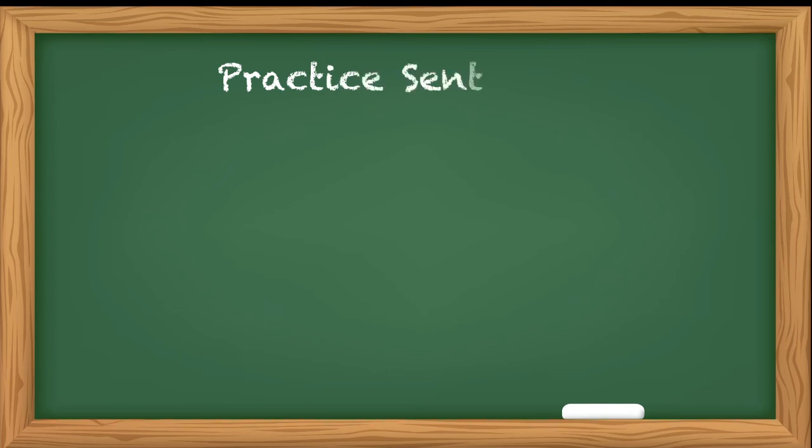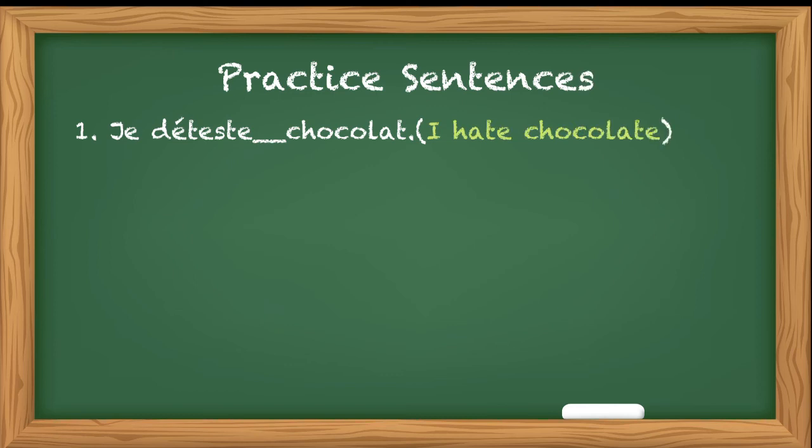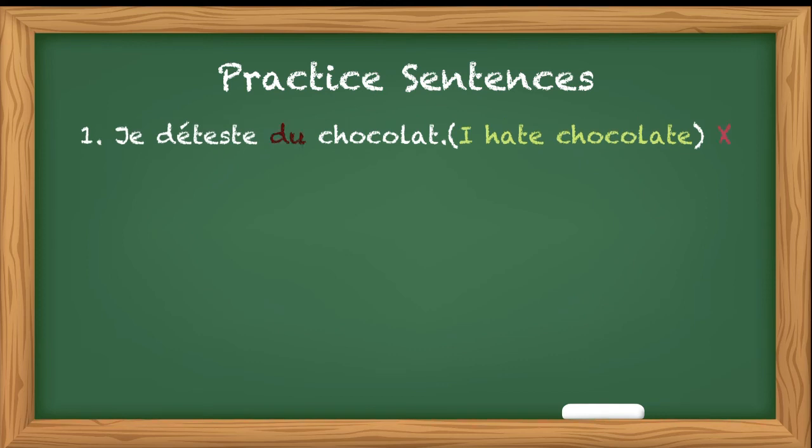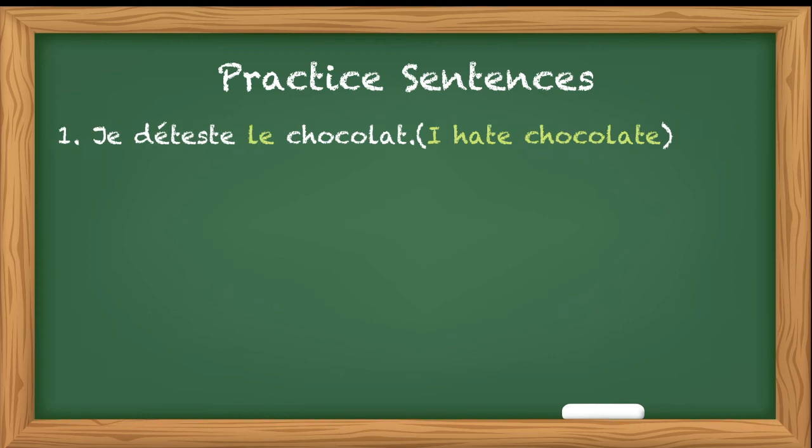The first sentence is: Je déteste - dash - chocolat. What are we going to fill here? I hate chocolate. We are talking in general terms, so we will use definite article: Je déteste le chocolat, and we are not going to say je déteste du chocolat.